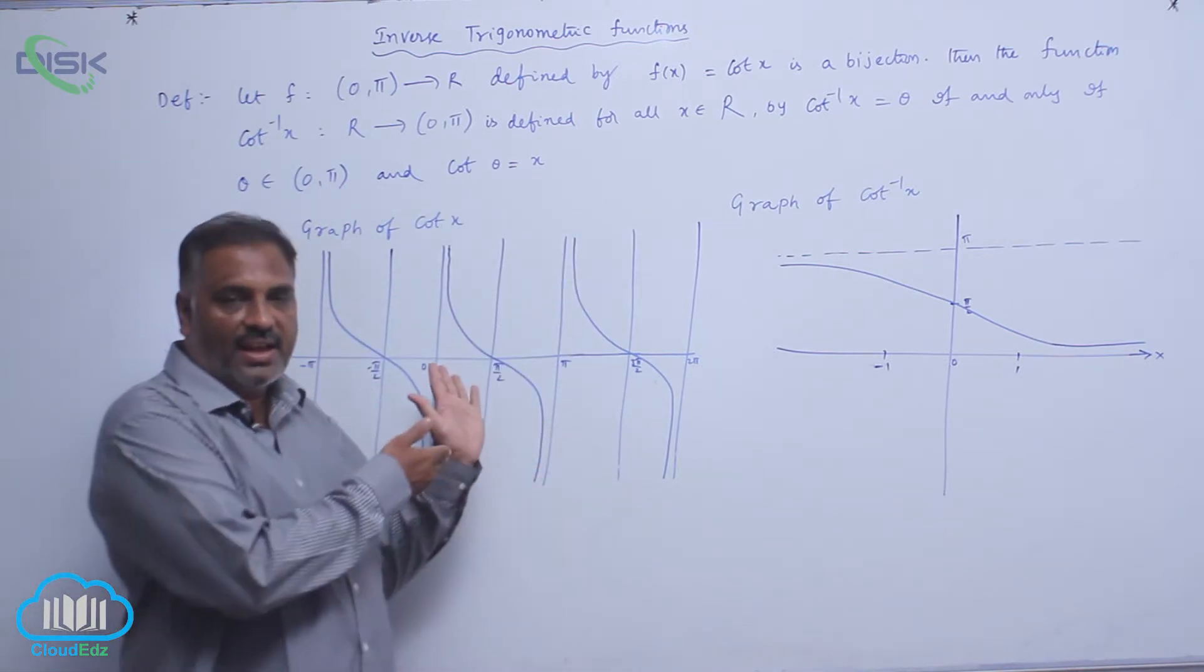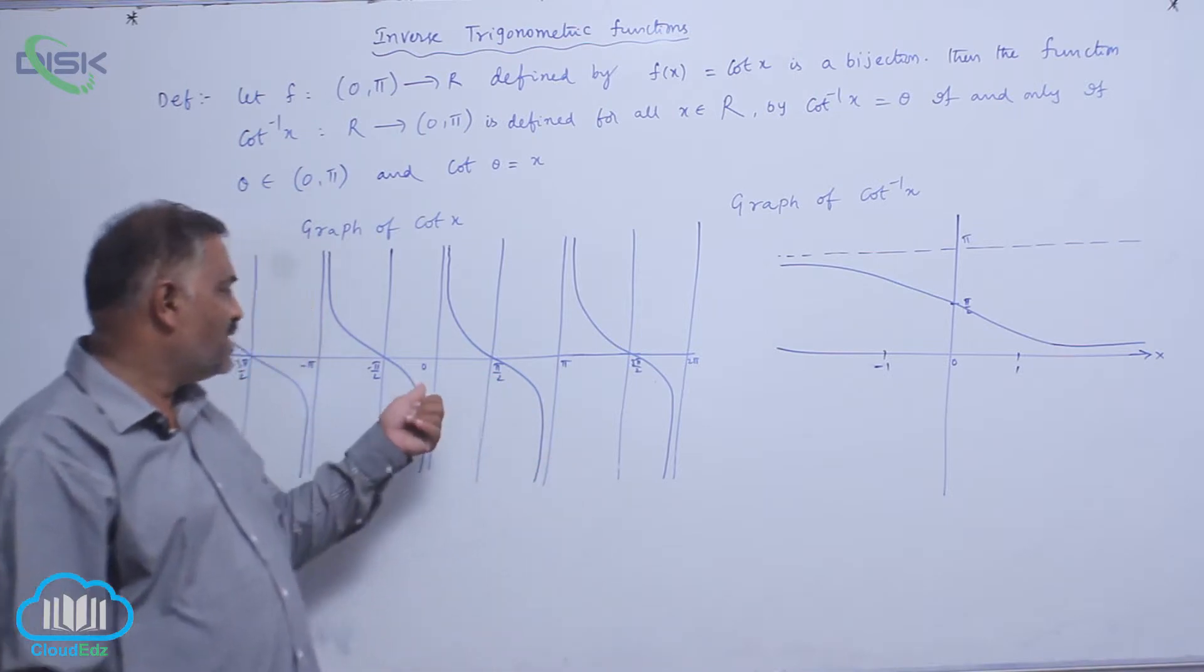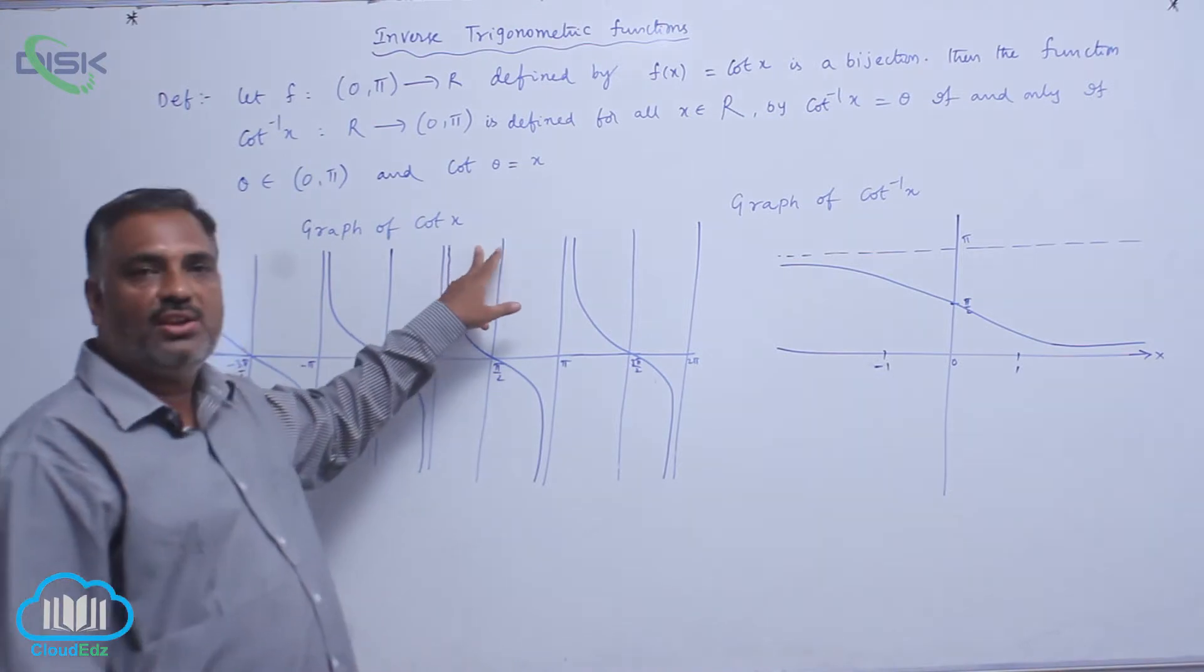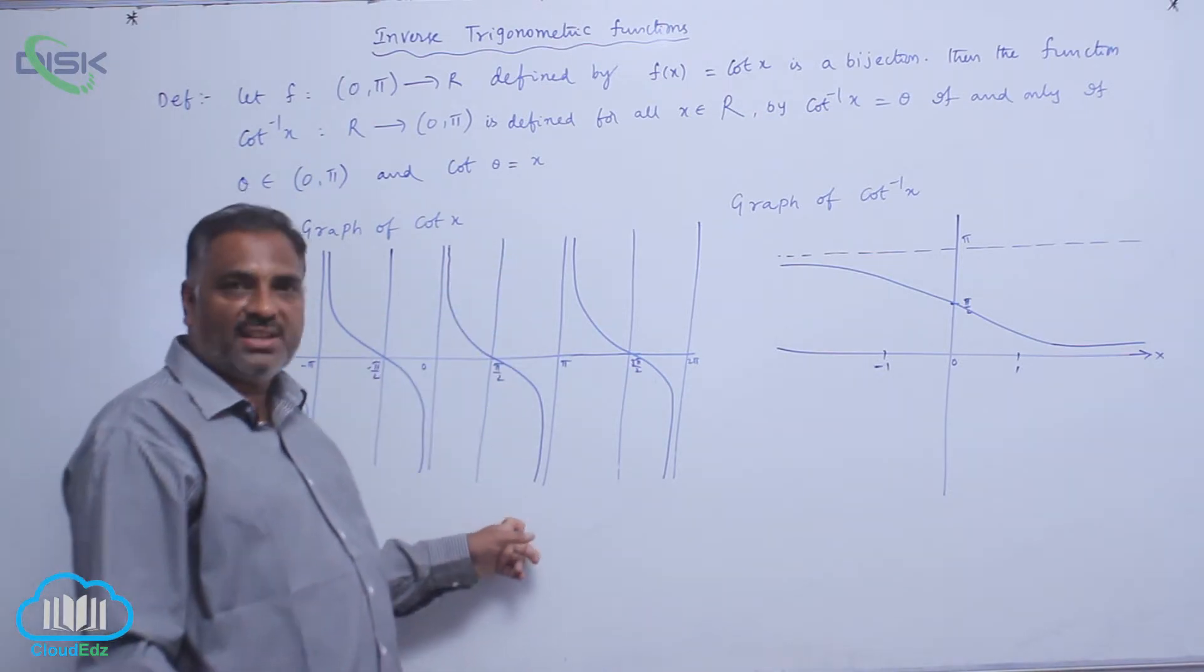Earlier we discussed the graph of cot x. You see that graph of cot x does not pass through the origin and maximum value is plus infinity, minimum value is minus infinity.